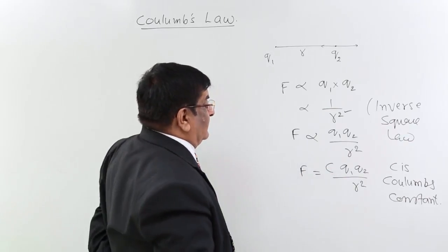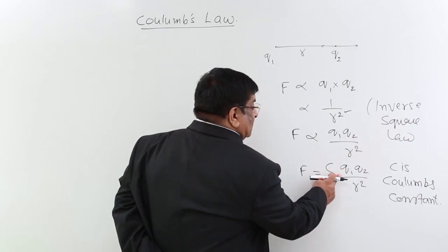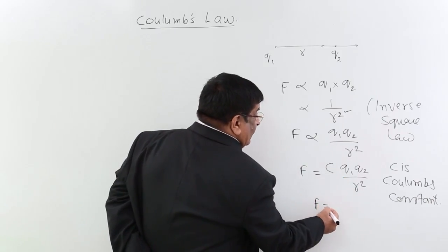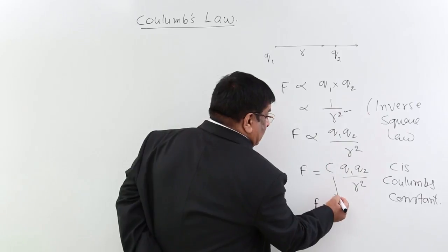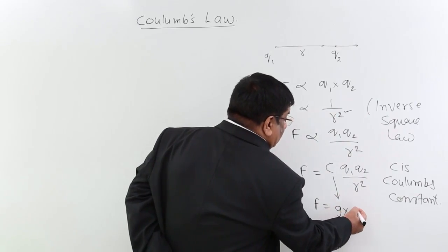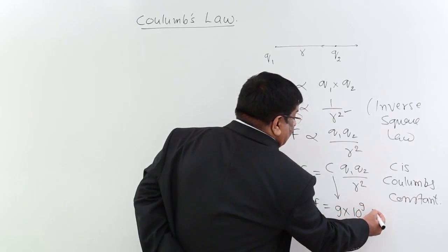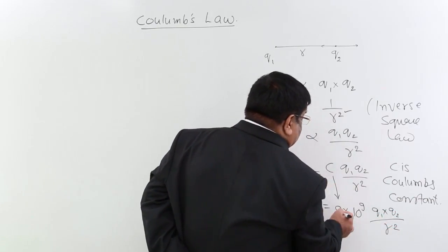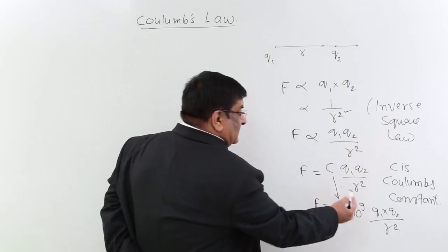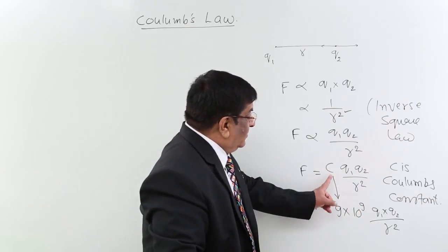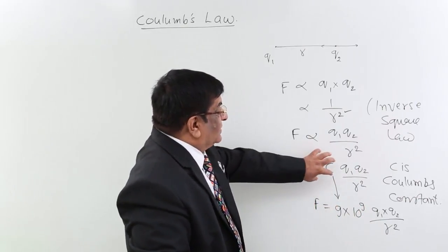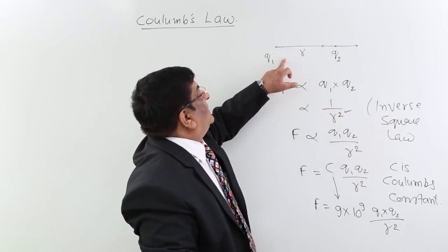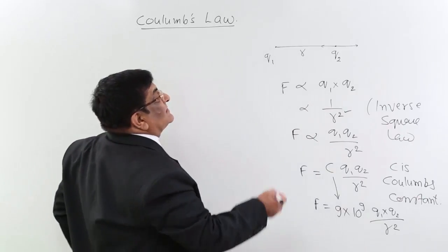C is Coulomb's constant and later in SI system the value was calculated as F is equal to, this C is 9 into 10 to the power 9, Q1, Q2 upon R square. This is the value of Coulomb's constant and this value is due to this C is affected by the surrounding of these charges, that is medium.